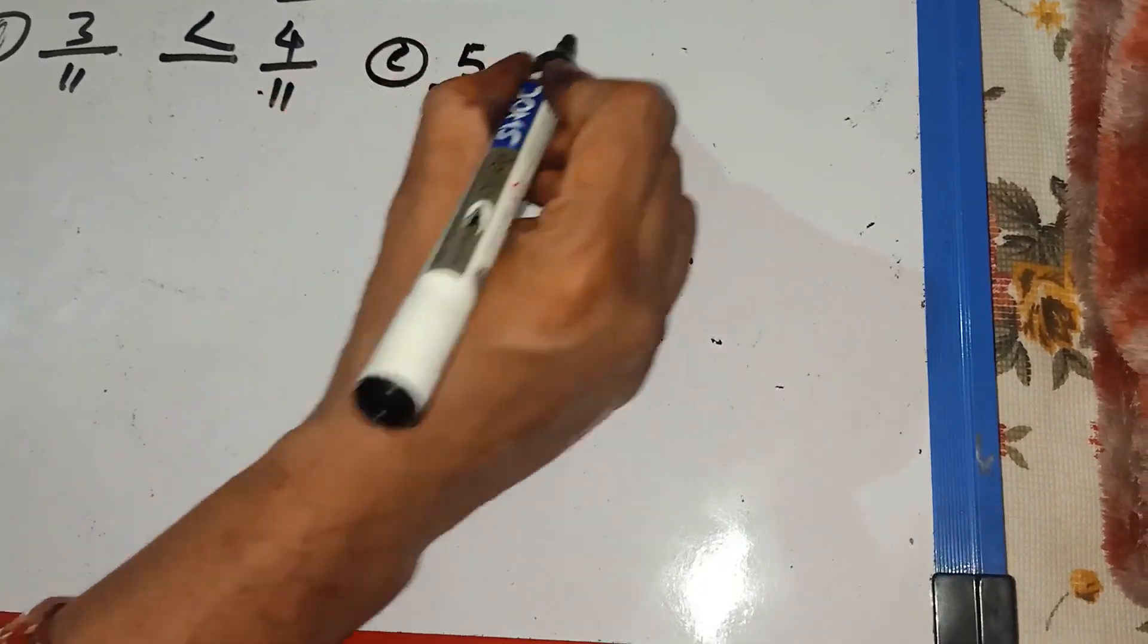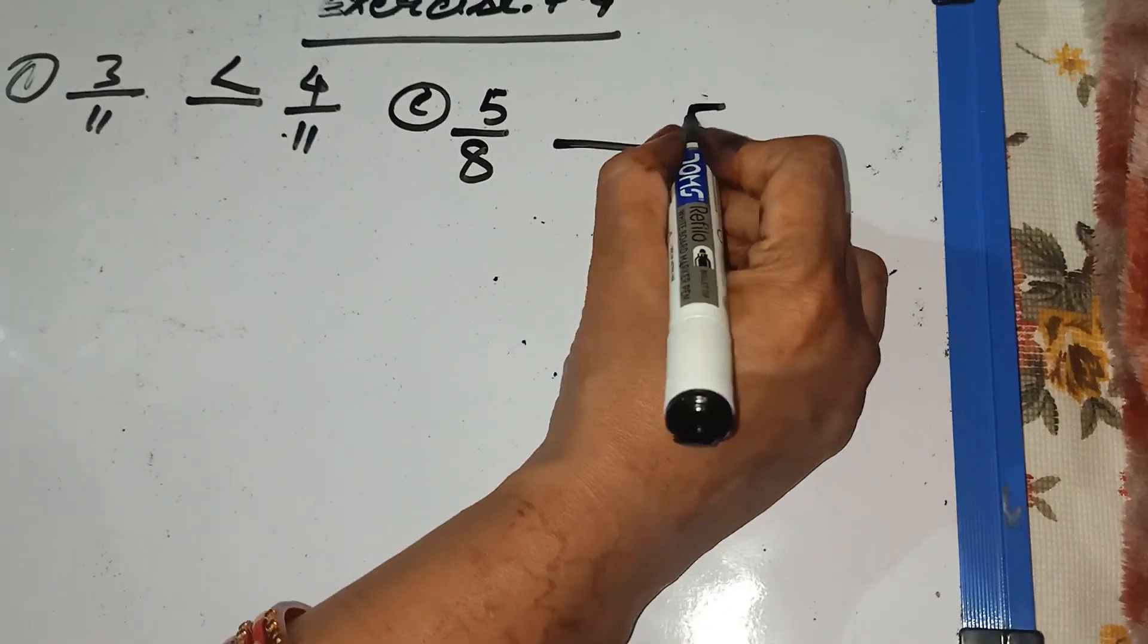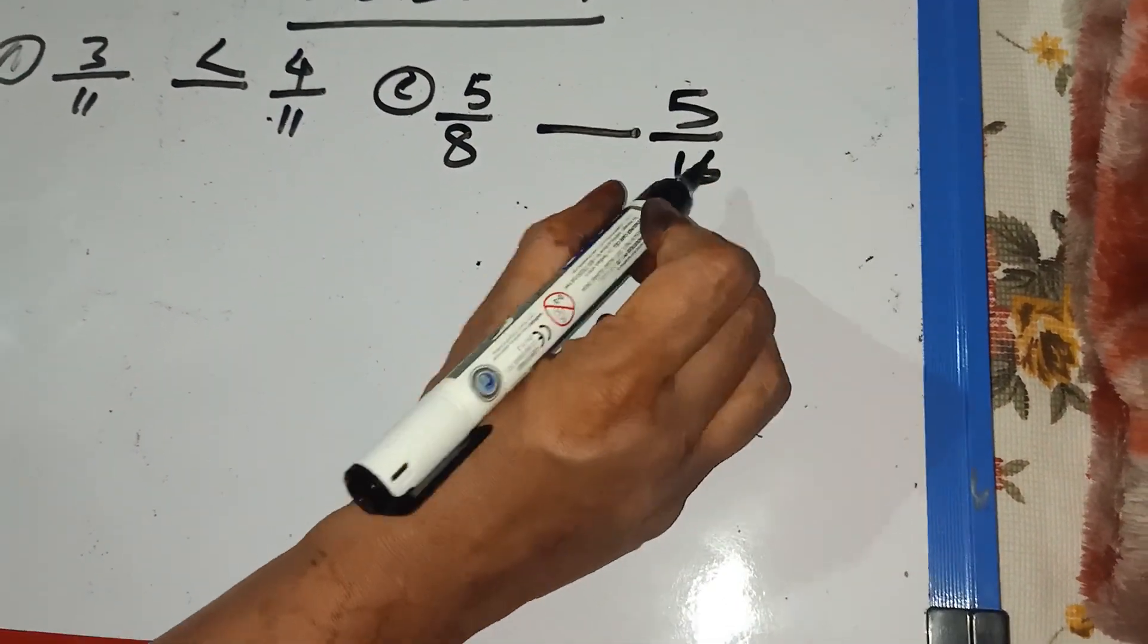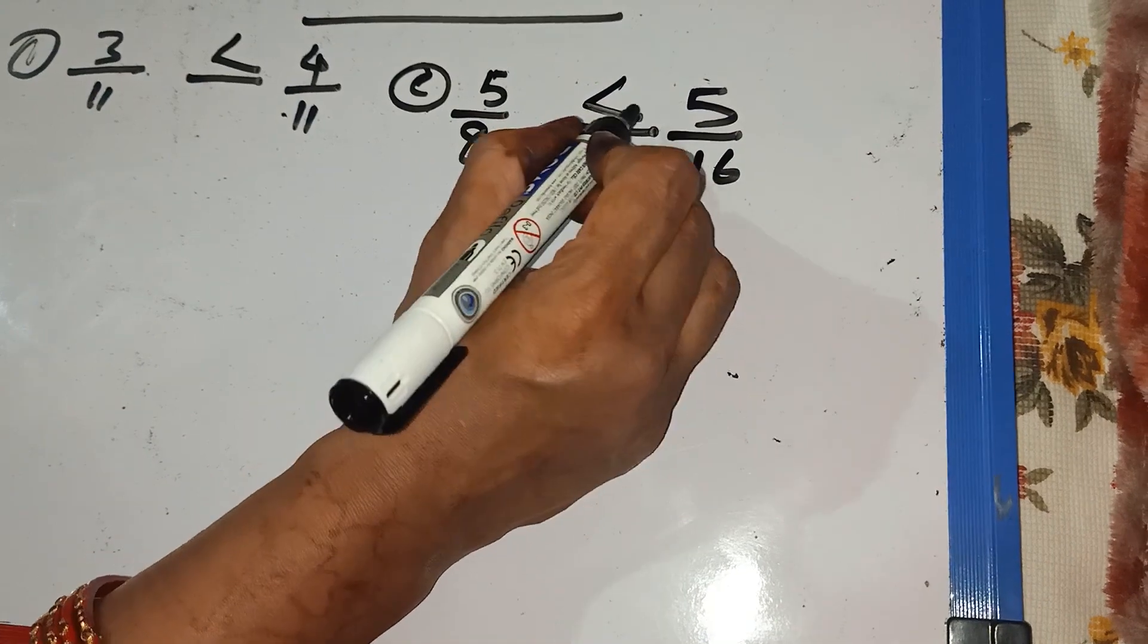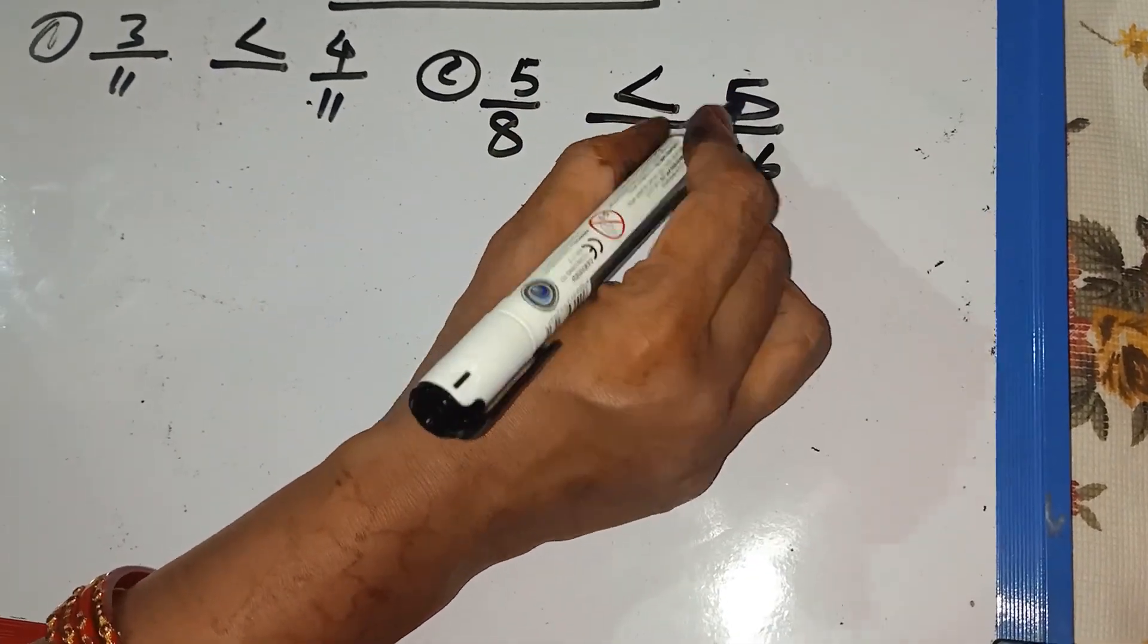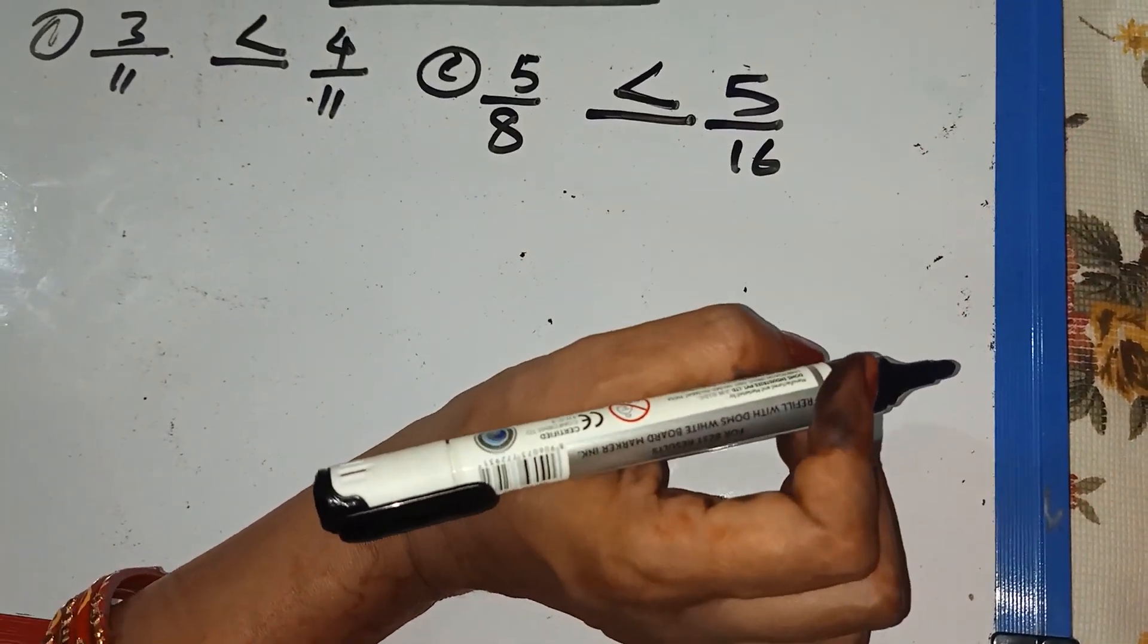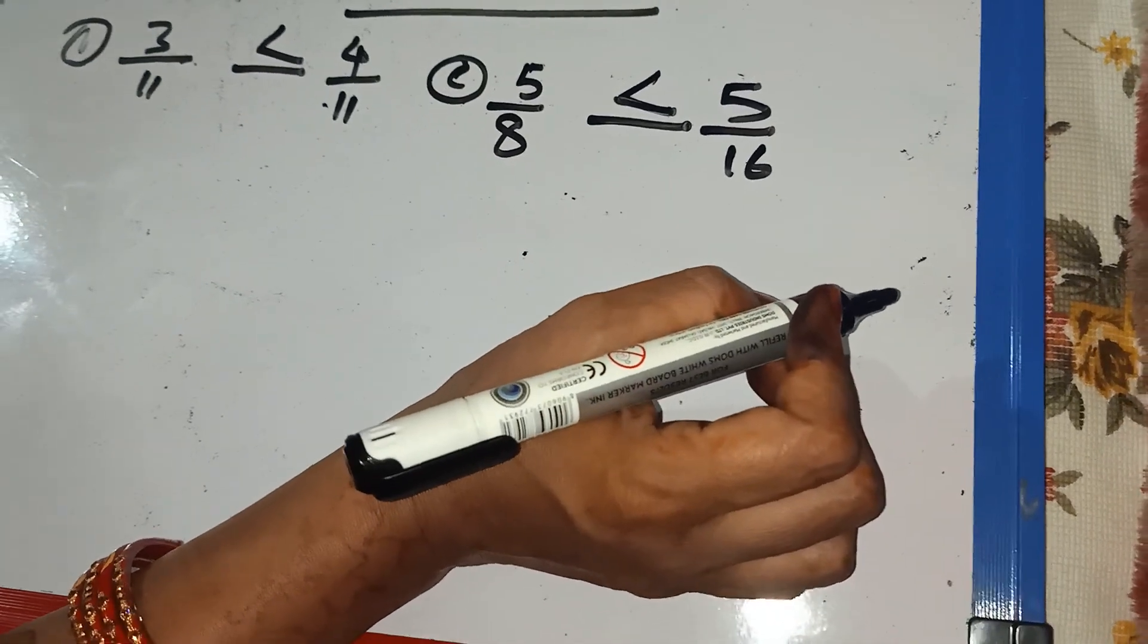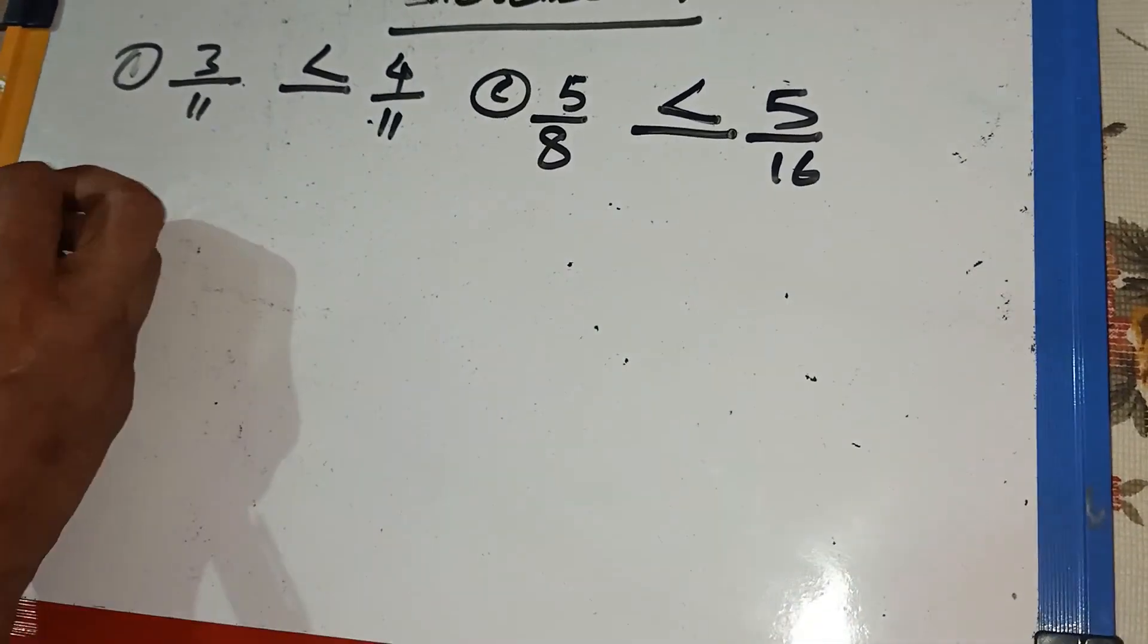Now, again you see question number C, 5 by 8 and 5 by 16. So, 16 is bigger. So, we put the bigger sign from 5 by 16. So, like that you can do question number 1 very easily.